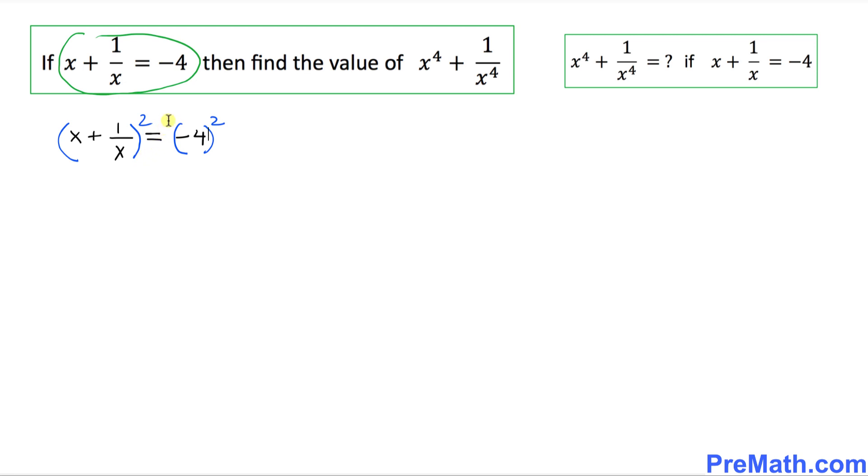And now we are going to use this well-known formula: a plus b square equal to a square plus 2ab plus b square. In this case, this is going to be our a and this is our b. Let's go ahead and use this formula. So this could be written as x square plus 2 times x times 1 over x plus 1 over x square equals to negative 4 squared, which is simply 16.